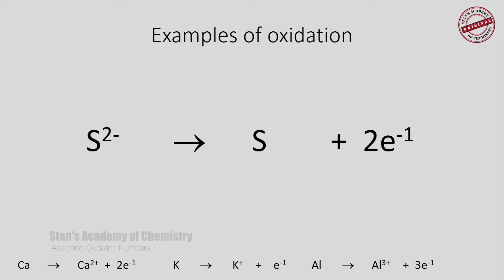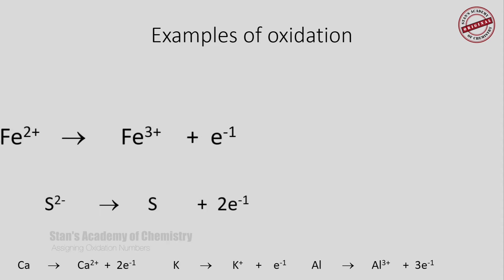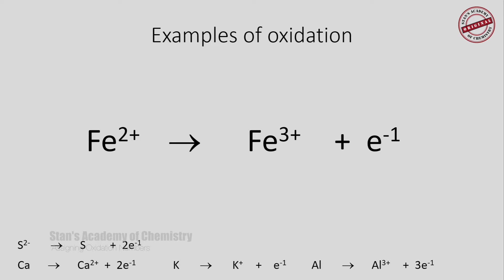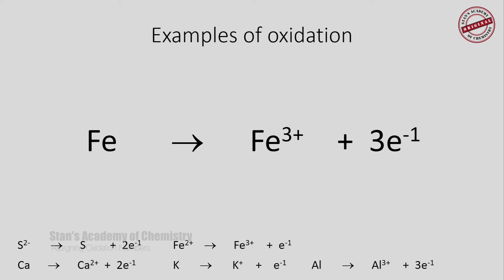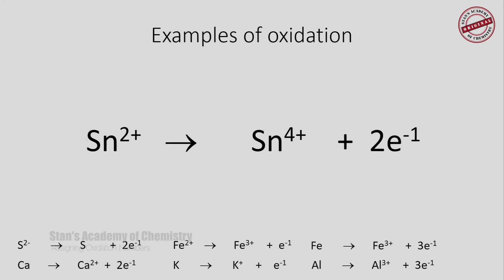The sulfide ion, when it changes into sulfur atoms, loses 2 electrons. Therefore, the oxidation number changes from -2 to 0 — there is an increase in oxidation number, hence the process is oxidation. Fe²⁺ (ferrous ion) changing to Fe³⁺ (ferric ion) happens when it loses 1 mole of electrons, so the oxidation number changes from +2 to +3 — again, oxidation. A neutral iron atom changing to Fe³⁺ loses 3 electrons, a change from 0 to +3 — oxidation. Sn²⁺ changes into Sn⁴⁺ by losing 2 electrons, also an increase in oxidation number, and therefore oxidation. These are the examples of oxidation.